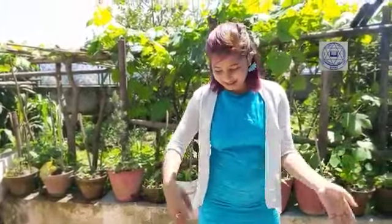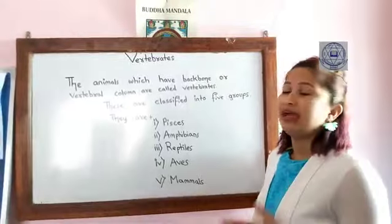Now, can you tell me some animals that have a backbone? Daily animals like cow, dog, tiger, lion, and birds — even aquatic animals have a backbone. Snakes that crawl on the ground also have a backbone. Today we will be discussing vertebrates and how many categorizations there are.